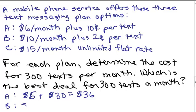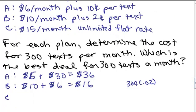How about Plan B? You pay $10. Now, 2 cents a text for 300, so we're doing 300 times 2 cents. That is $6. So you would have $16, that's way better than Plan A. But actually, in this case, Plan C is only the $15, so that would be the best deal if I use that many texts.